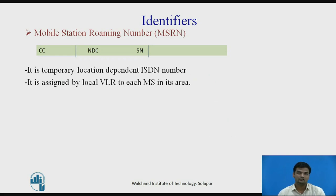The next identifier is the MSRN — Mobile Station Roaming Number. It is an interim location-dependent ISDN Number assigned to a Mobile Station by the regionally responsible Visitor Location Register (VLR). Using the MSRN, incoming calls are channeled to the MS. The MSRN is used specifically when the MS is roaming in another network.